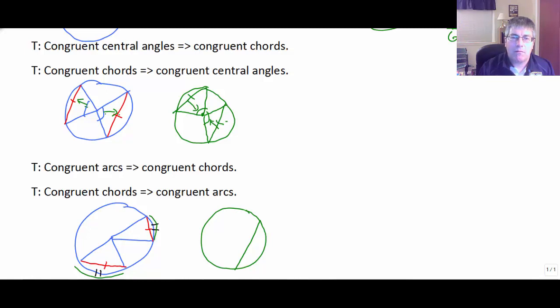So here I have a couple of, oh, that wasn't a very good chord. But doing that again, nice size chord there. So if those two arcs are congruent, well, the chords that they cut have to be congruent. And vice versa. If the chords are congruent, then those arcs have to be congruent.